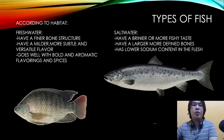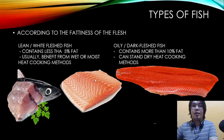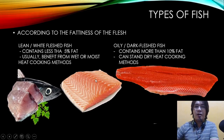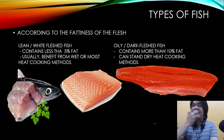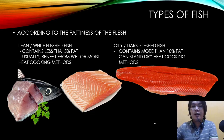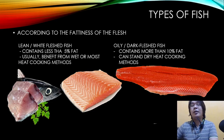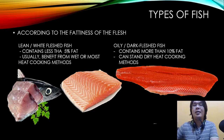Saltwater fish also have a lower sodium content in the flesh. Based on the fatness of the flesh, there is lean white flesh fish and oily dark flesh fish. Lean white flesh fish contains less than five percent fat, while oily dark flesh fish contains more than ten percent fat. Lean white flesh usually benefits from wet or moist heat cooking methods, while oily dark flesh fish benefits from dry heat cooking methods.